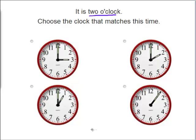Now, do you know which clock says 2 o'clock? Well, let's read them all. This clock says 3 o'clock. So it's not right.